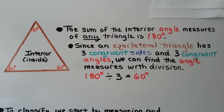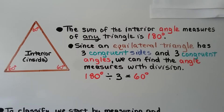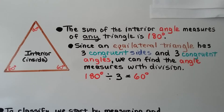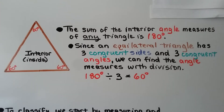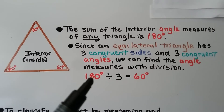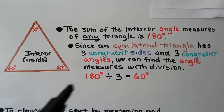The sum of the interior angle measures of any triangle is 180 degrees. Since an equilateral triangle has three congruent sides and three congruent angles, we can find the angle measures with division. We do 180 degrees divided by 3 — the three angle measures — and that's 60 degrees each.